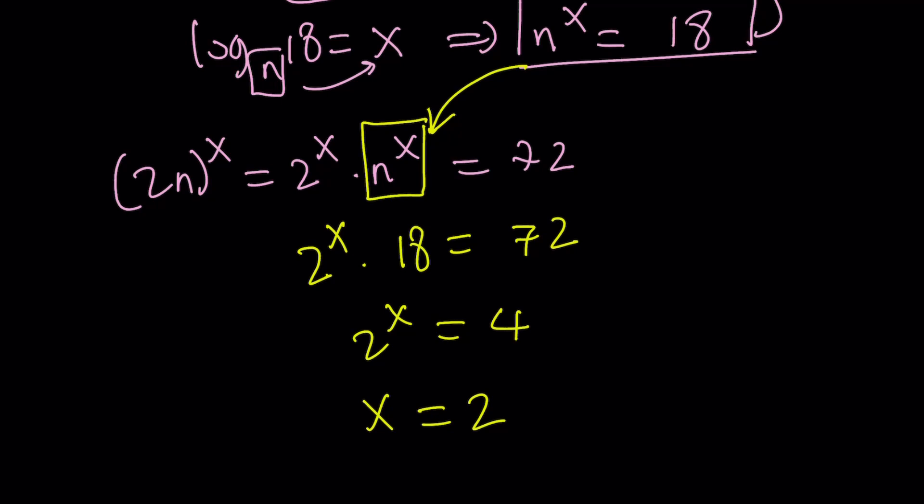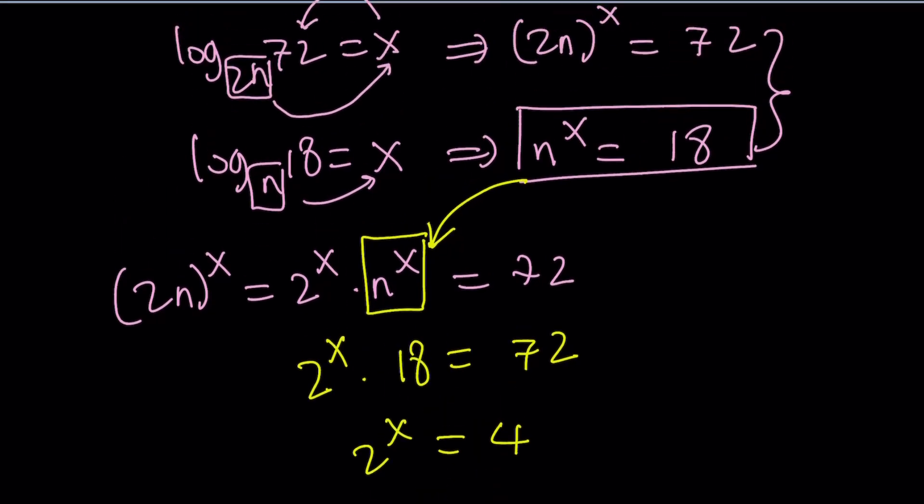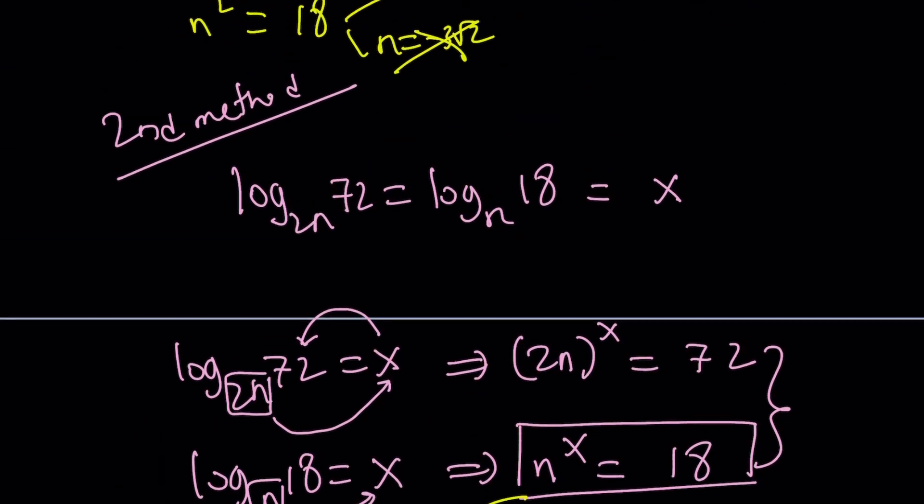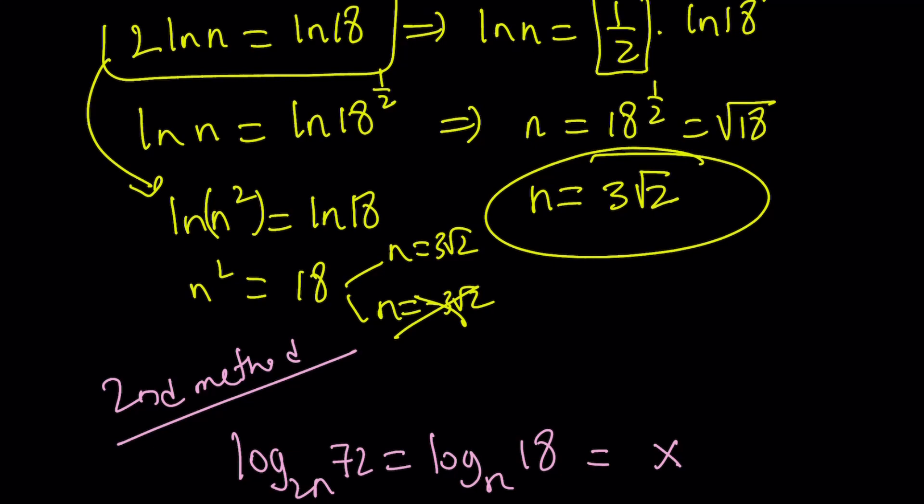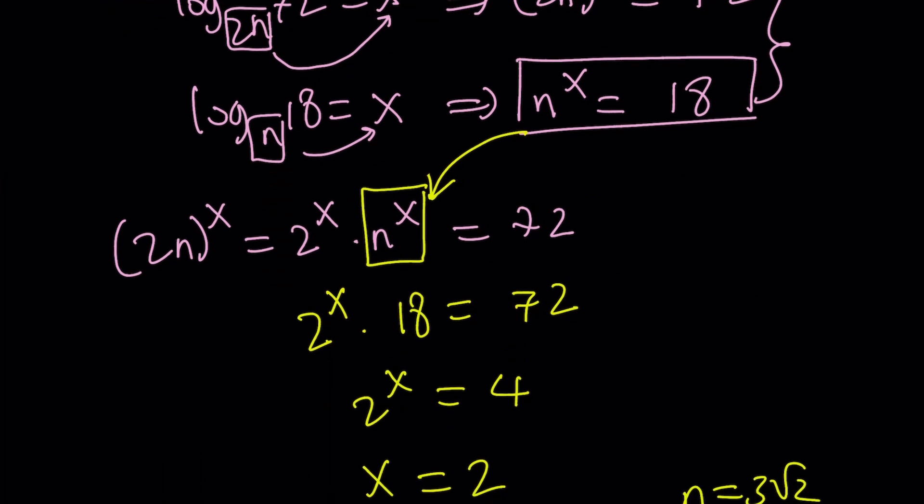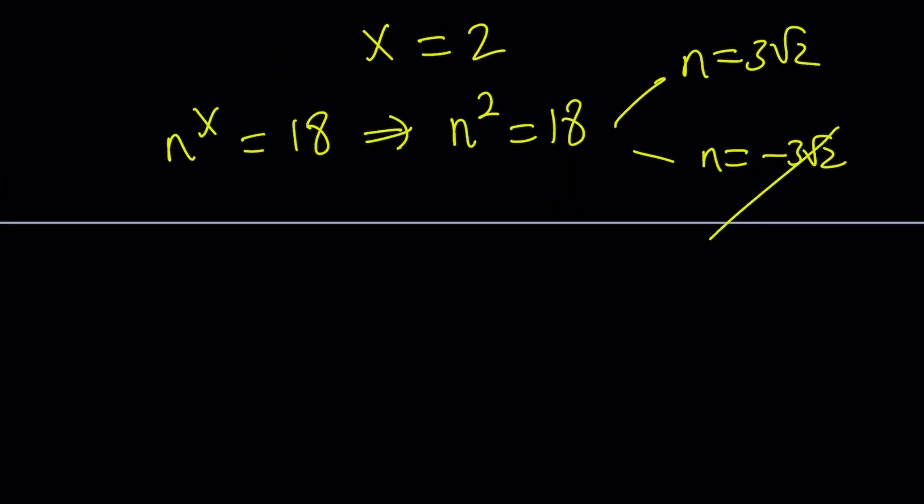But we're not looking for x. We're looking for n. And from the second equation, we have n to the power of x equals 18. Since we know that x is 2, this turns into n squared equals 18. We get 2 results. But remember what we said about n, because n and 2n are the bases, so they have to be positive and they have to be different from 1. Therefore, negative numbers we cannot use. So that is going to be the answer.